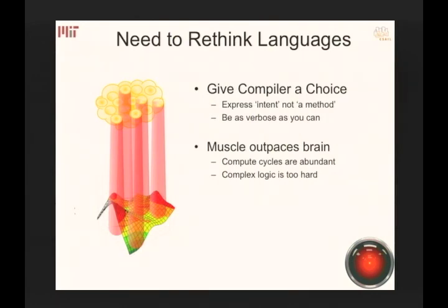Our approach was twofold: ask programmers to express the intent of the program — what they're trying to solve, not how — and let the compiler figure out the best method. Additionally, computers keep doubling performance every 18 months while the human brain is still what it was 40 years ago. We should let the system use increasing compute to solve optimization problems rather than forcing everything into human heads.